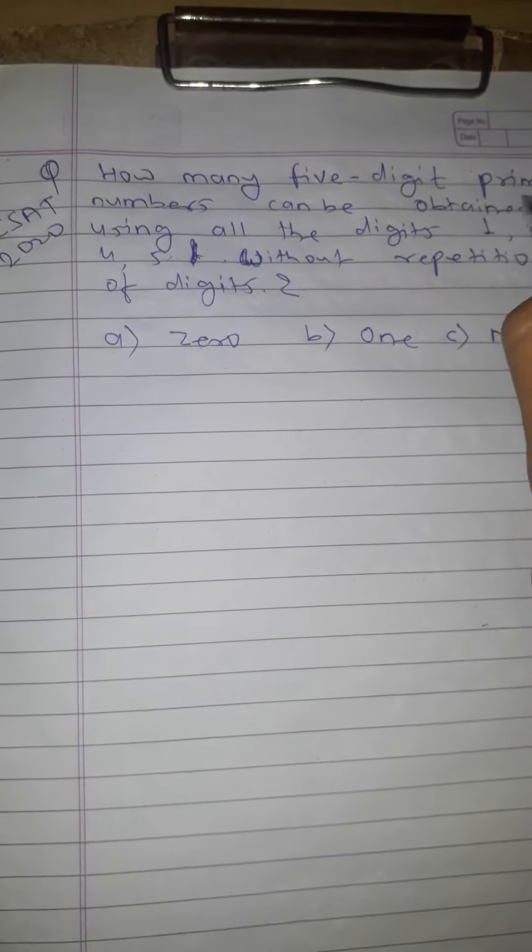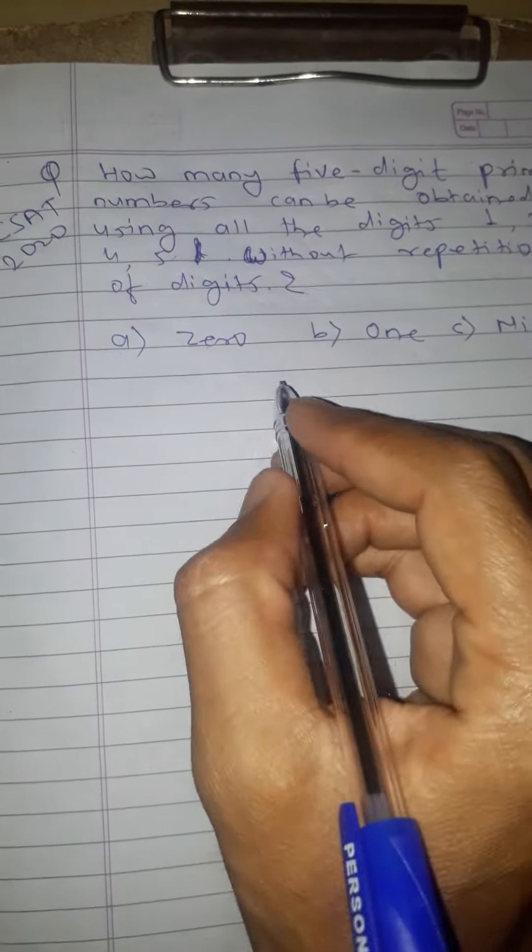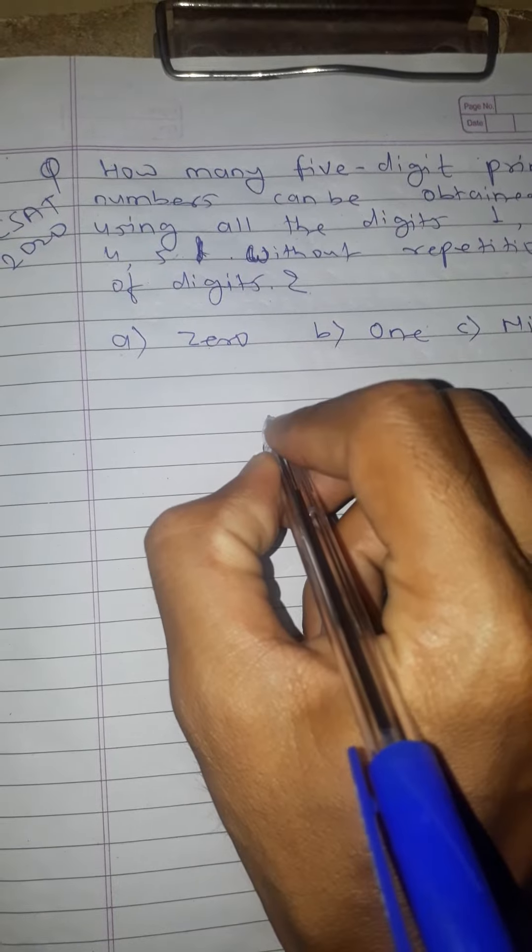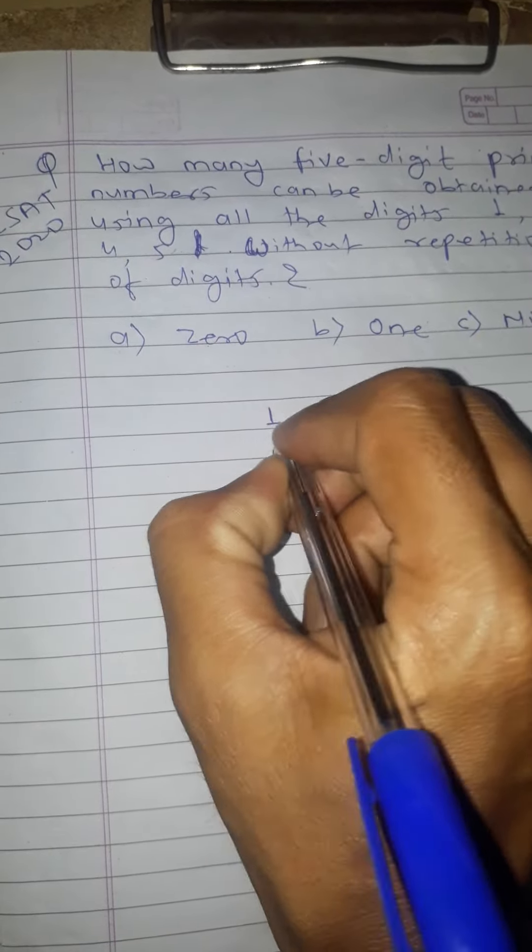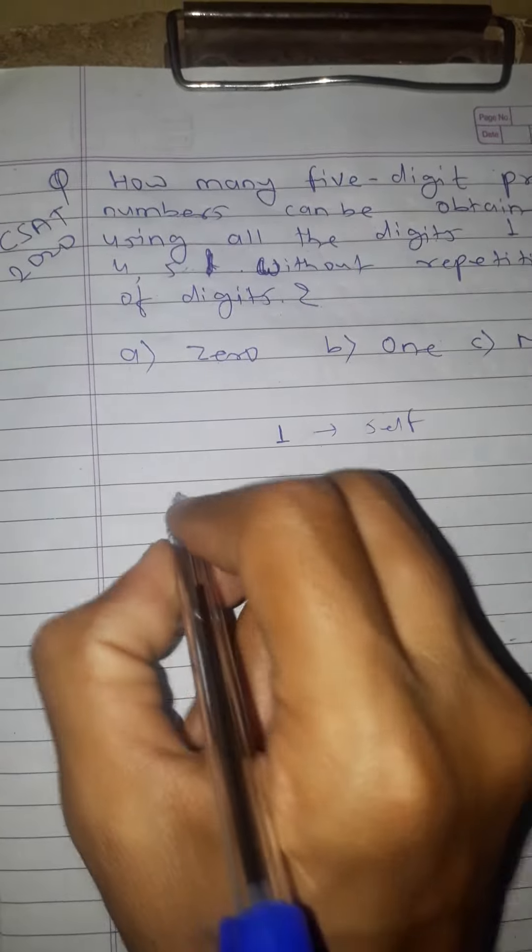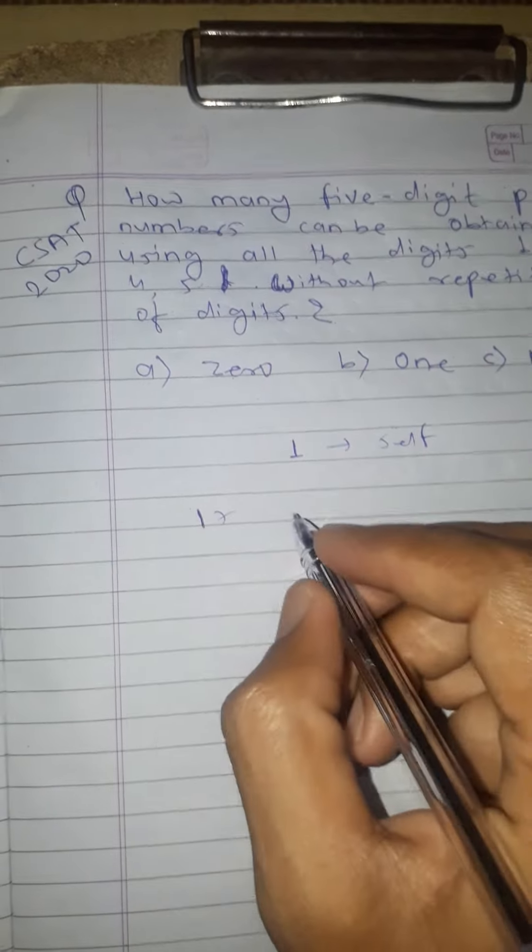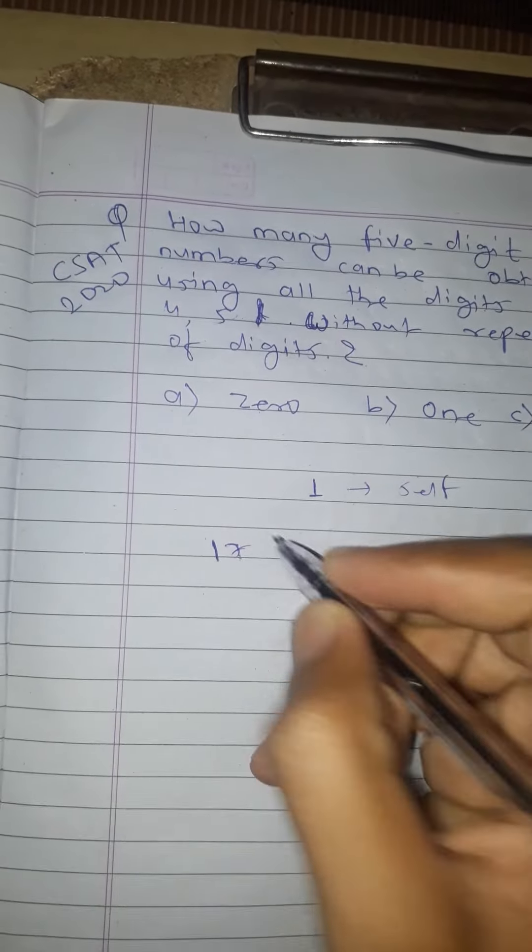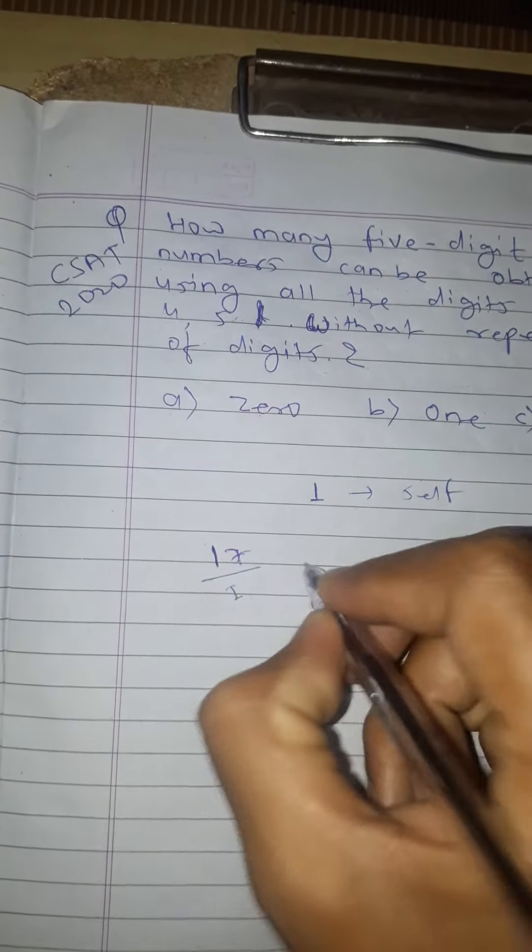A prime number is a number that is divisible by one and itself only. For example, 17 is a prime number. It is only divisible by 1 and 17.